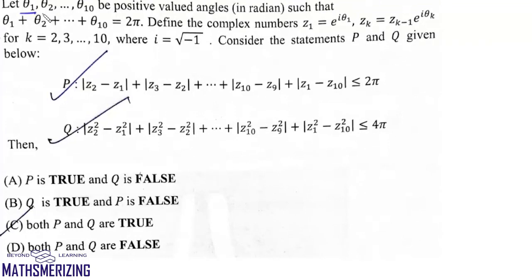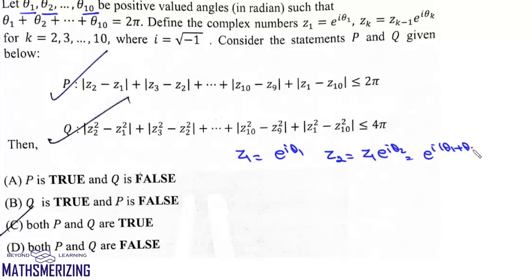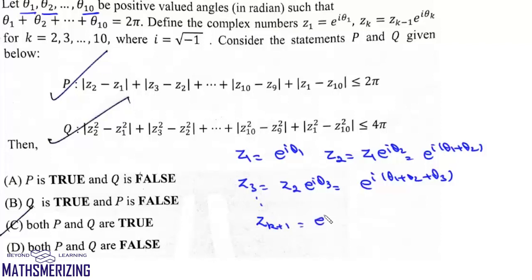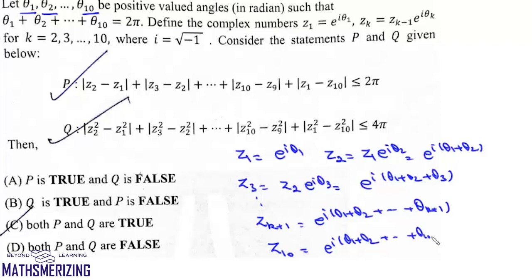The next question: let θ1, θ2, and θ10 be positive valued angles such that z1 = e^(iθ1), z2 = z1·e^(iθ2) = e^(i(θ1+θ2)), z3 = z2·e^(iθ3) = e^(i(θ1+θ2+θ3)), and similarly z_{k+1} = e^(i(θ1+θ2+...+θ_{k+1})). So z10 = e^(i(θ1+θ2+...+θ10)).